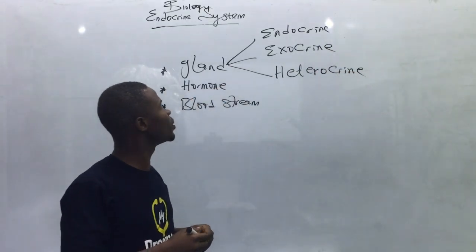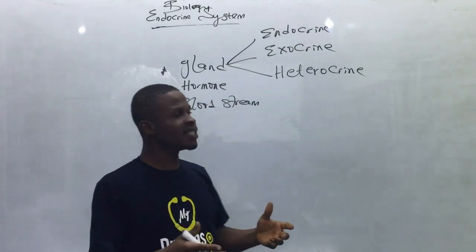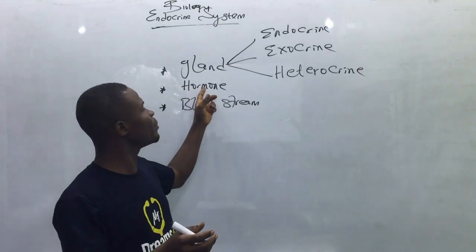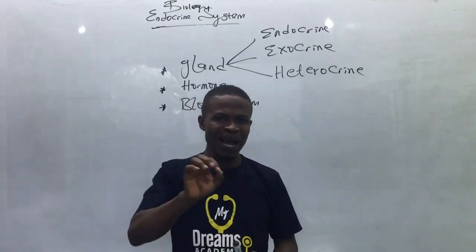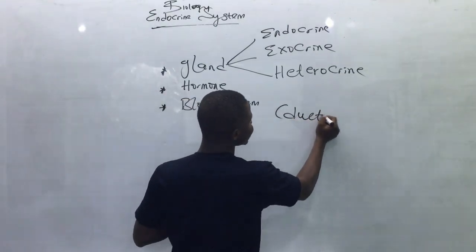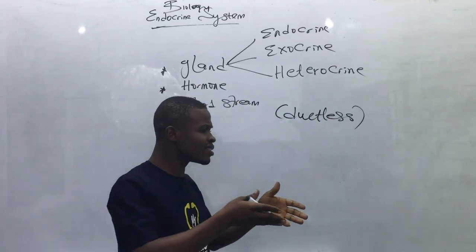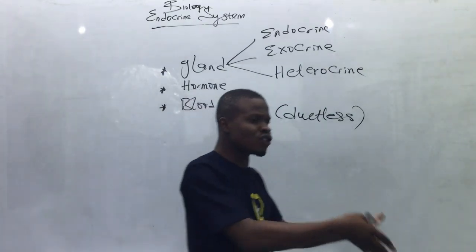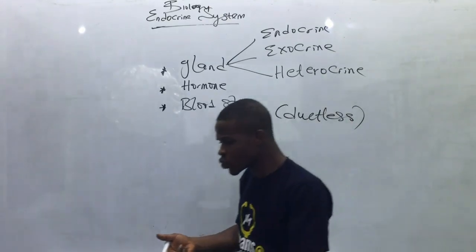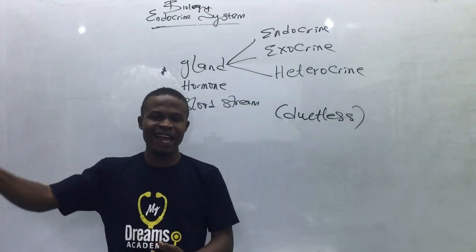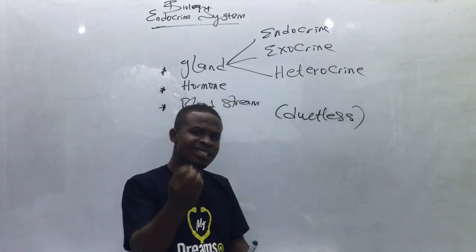The endocrine gland is a group of glands and capillaries that secretes a chemical substance known as hormone into the bloodstream, and we call the endocrine gland a ductless gland — mark the word ductless. The products of endocrine glands are secreted into the bloodstream; they diffuse into the blood, and the blood serves as a transport system carrying this chemical substance which we call hormone to a target organ where it exerts a function.